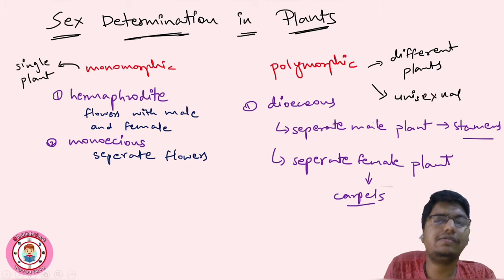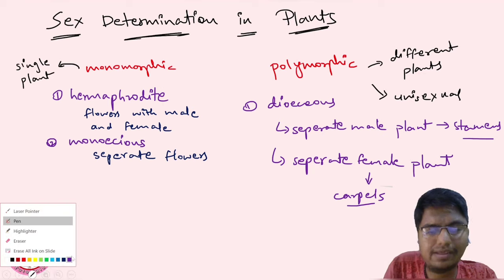This is the case with plants - monomorphic and polymorphic. Monomorphic is single plant having hermaphrodite where flowers have both sexes, and monoecious where flowers are separate male and female. In dioecious, plants are separate - male plant is having stamens specifically and female plant is having carpels specifically.